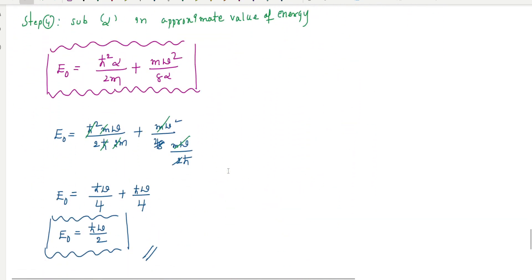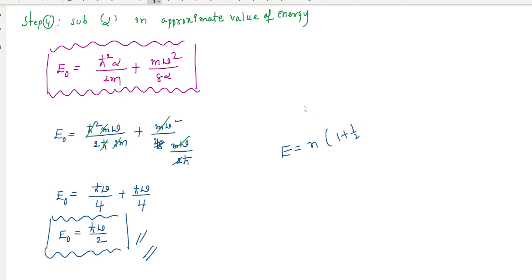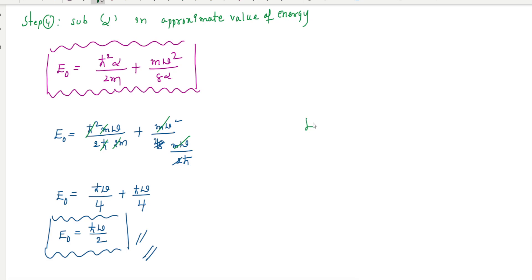The result is E₀ = ℏω/2, which is the ground state energy of the harmonic oscillator. This matches the known exact result: E_n = ℏω(n + 1/2), and for n = 0 we get E₀ = ℏω/2.